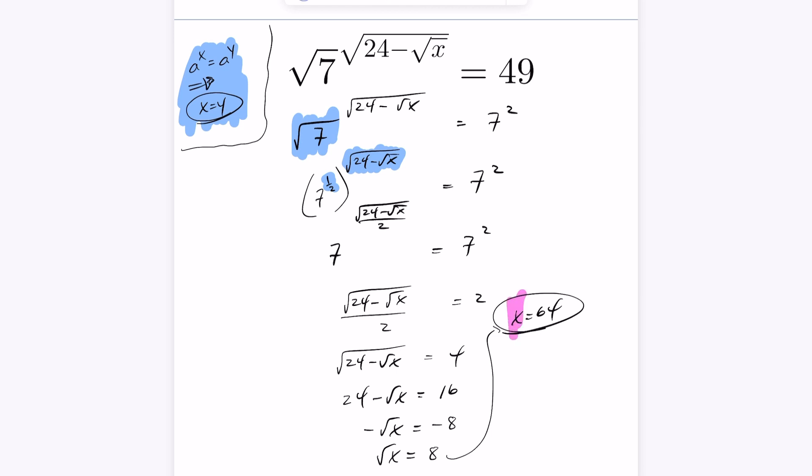If I take a look here, I've got x equaling 64. If I substitute that into this equation, this will be 24 minus the root of 64, which is 24 minus 8, which is 16. And the square root of 16 is 4.